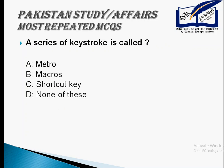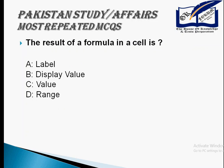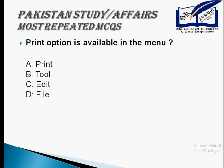A series of keystrokes is called its macros. A block of cells is called its workbook. The result of a formula in a cell is called its value. To keep table heading visible, we can use freeze heading, which is available in the View menu.